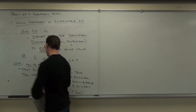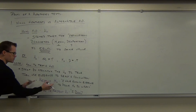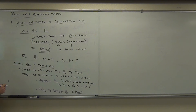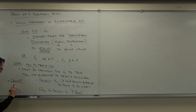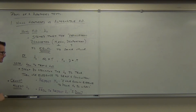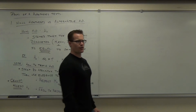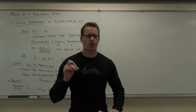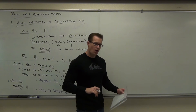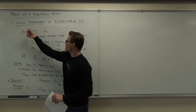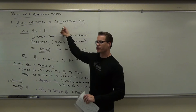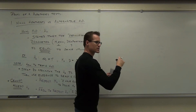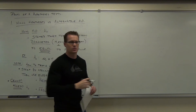You can't ever accept H sub zero. You can just prove it wrong or fail to prove it wrong. Well, why in the world are we doing this if all we're doing is proving statements wrong? Here's the cool thing: we're going to have another piece of this puzzle. We're going to have not only the null hypothesis, but the alternative hypothesis. Let's take a look at that and see how these things interplay.